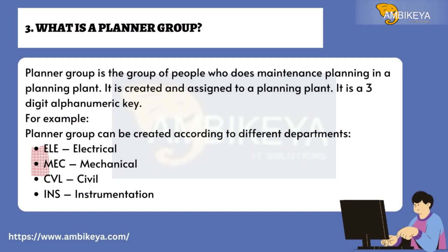Question number three: What is a Planner Group? A planner group is the group of people who does maintenance planning in a planning plant. It is created and assigned to a planning plant and is a three-digit alphanumeric key. For example, planner groups can be created by department: ELE (Electrical), MECH (Mechanical), CVL (Civil), INS (Instrumentation).